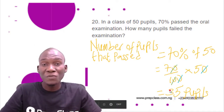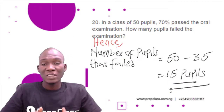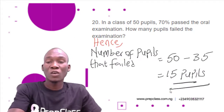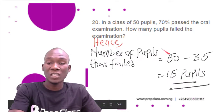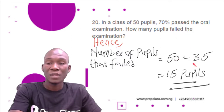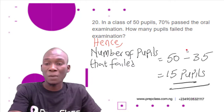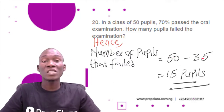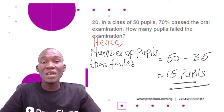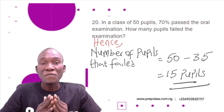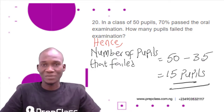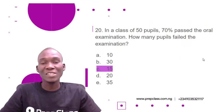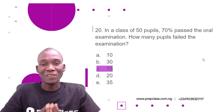Now, the number of pupils that failed equals the total number of pupils in the class minus the number who passed. That is 50 minus 35, which gives us 15. So 15 pupils failed the examination. The correct option is C, and that brings us to the end of today's session.